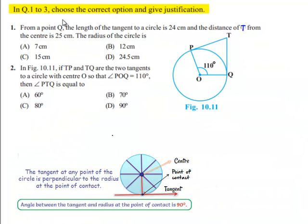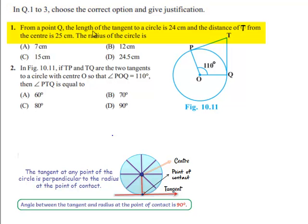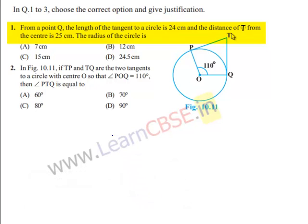In question number 123, choose the correct option and give justification. First question: from a point Q, the length of tangent to the circle is 24 cm and the distance from the center is 25 cm. Find the radius of the circle.